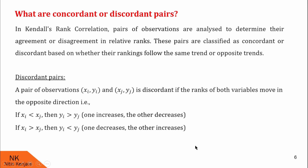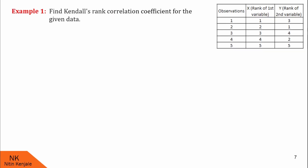Now let us understand this concept with the help of an example. We are asked to find Kendall's rank correlation coefficient for the given data. This is the given data table with five observations. The second column denotes the ranks of the x variable, arranged in ascending order. The third column denotes the ranks of the y variable, arranged in correspondence with the ranks of the x variable.